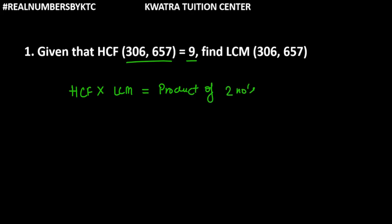Product of two numbers means that you have to multiply these two numbers, these two given numbers. So we have HCF as 9. LCM is not known to us. Product of two numbers is 306 into 657.